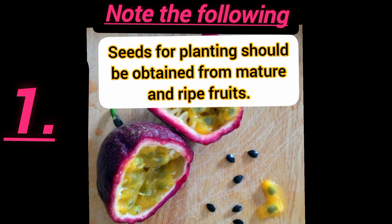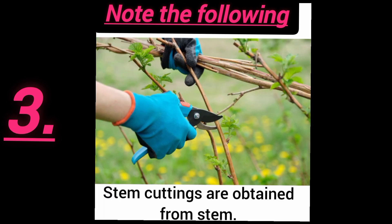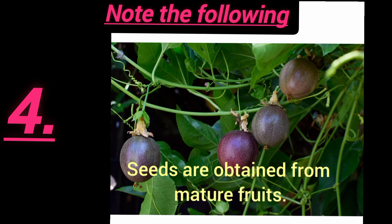Note the following: seeds for planting should be obtained from mature and ripe fruits. Note number 2, stem cuttings should be obtained from healthy branches. Note 3, stem cuttings are obtained from the stem, and seeds are obtained from mature fruits.